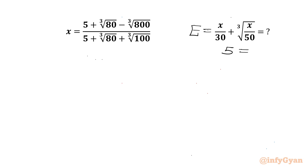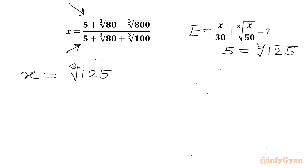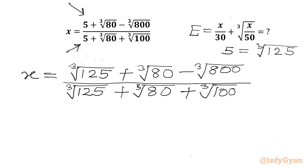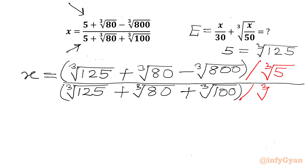Now we know that 5 can be written as cube root of 125. So we write x equal to cube root of 125 plus cube root of 80 minus cube root of 800, all over cube root of 125 plus cube root of 80 plus cube root of 100. Now we will divide our numerator and denominator by cube root of 5.